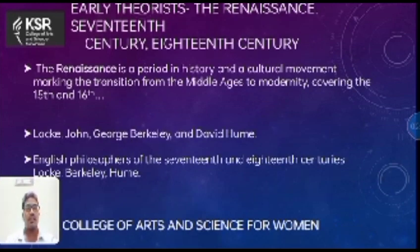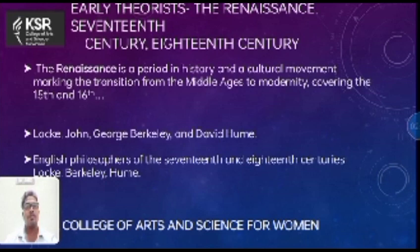The early theorists of the Renaissance in the 17th and 18th centuries: the Renaissance is a period in history — a cultural movement marking the transition from the Middle Ages to modernity, covering the 15th to 16th century. Some of the main Renaissance and English philosophers of the 17th and 18th centuries include Locke, Berkeley, and David Hume.